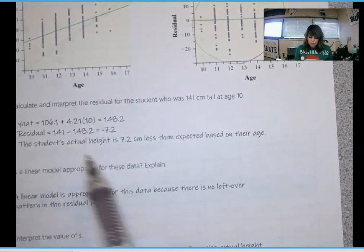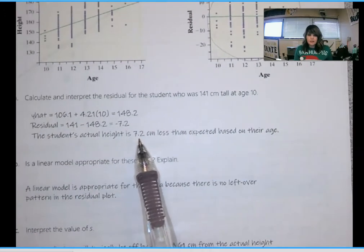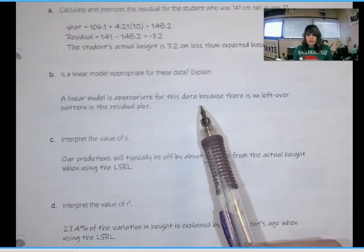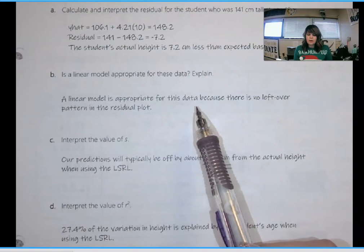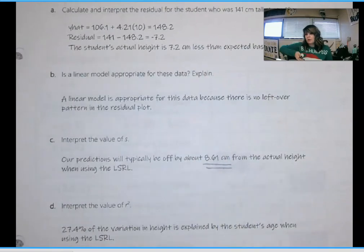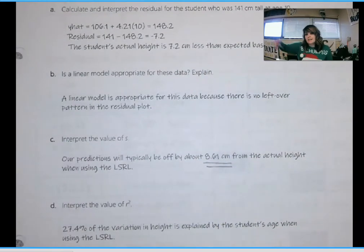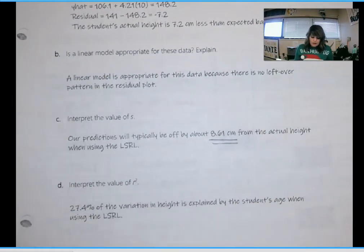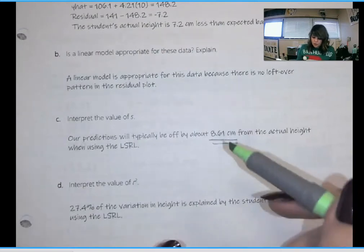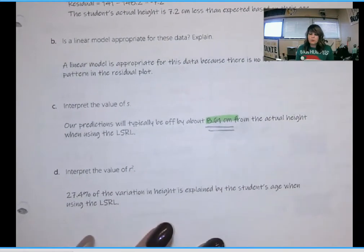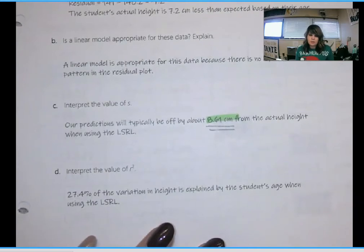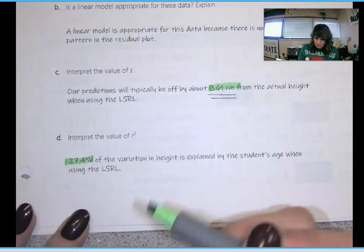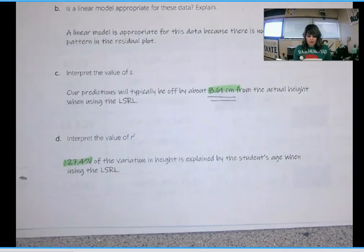The only reason you're seeing these vertical lines is because of the way age is recorded and not because there's some leftover pattern or relationship. So my residual for A is 7.2, less than expected. I got that a linear model is appropriate because there's no leftover pattern. For S, make sure you have units—8.61 centimeters from actual height. And for R squared, once again, make sure you have it written as a percent.